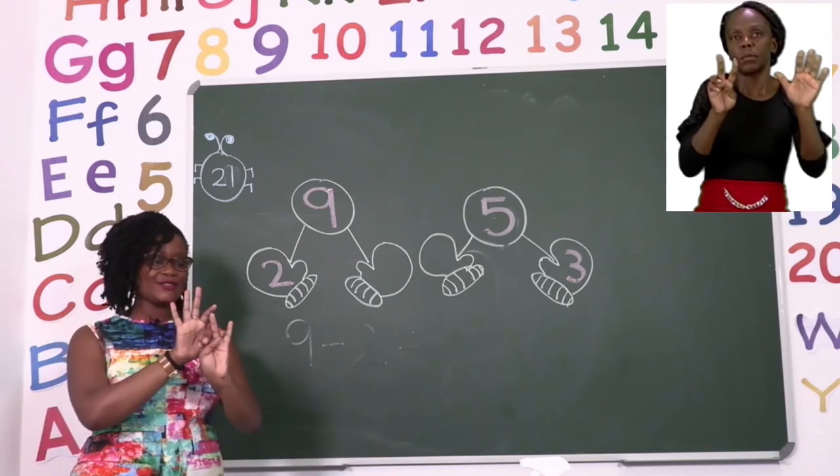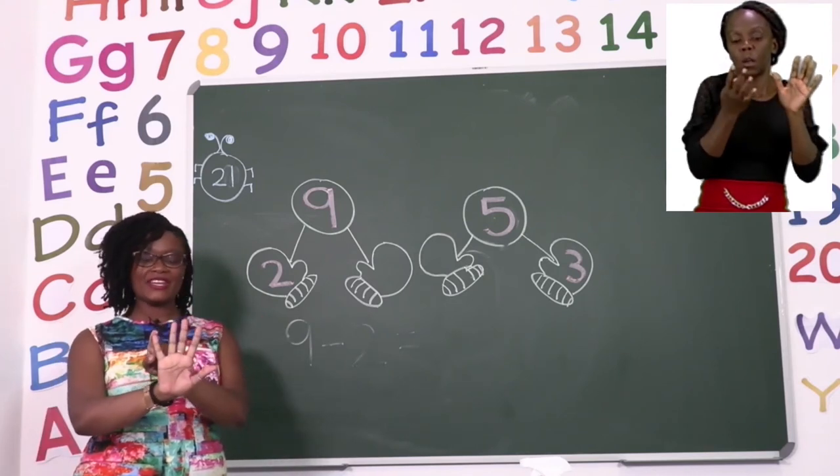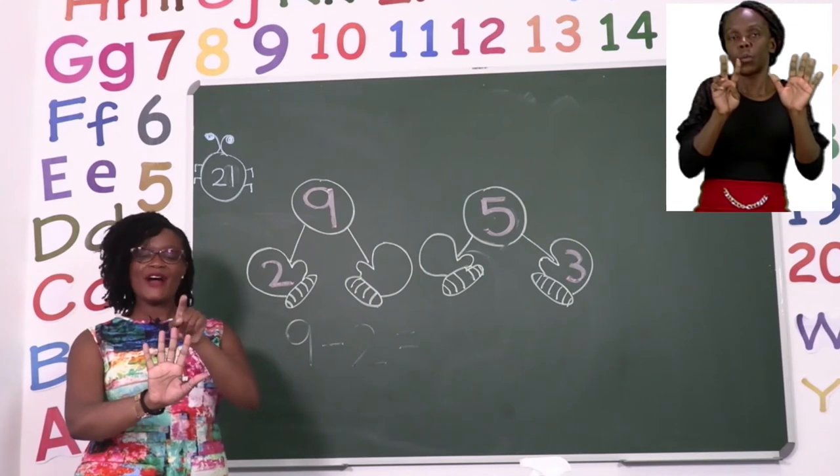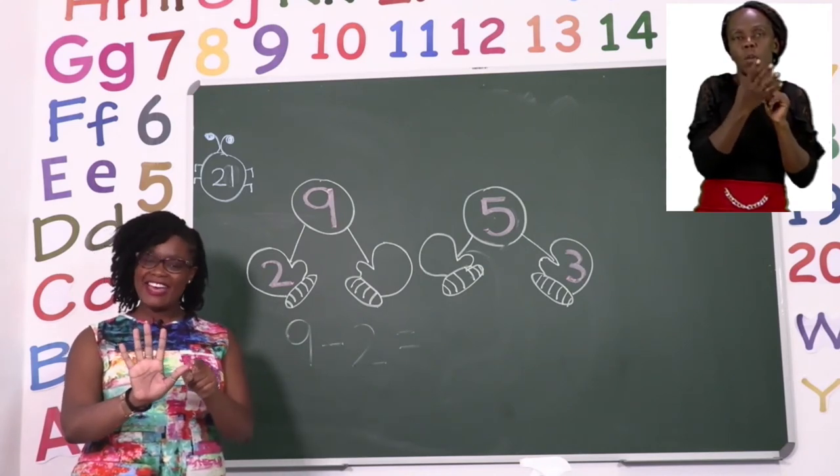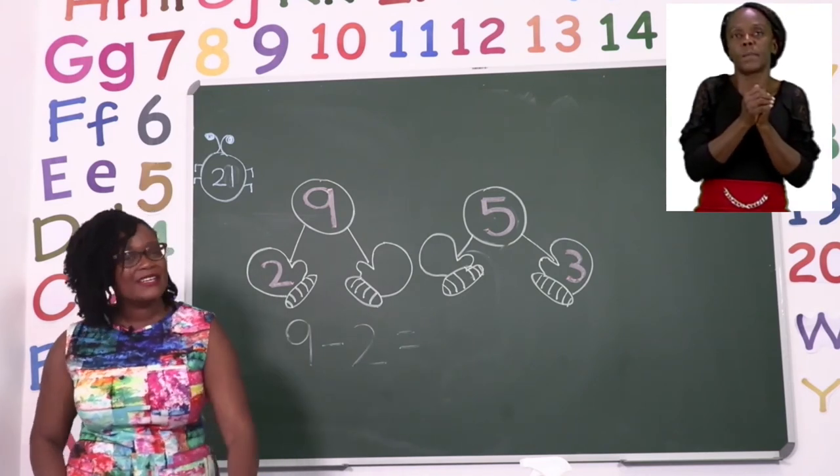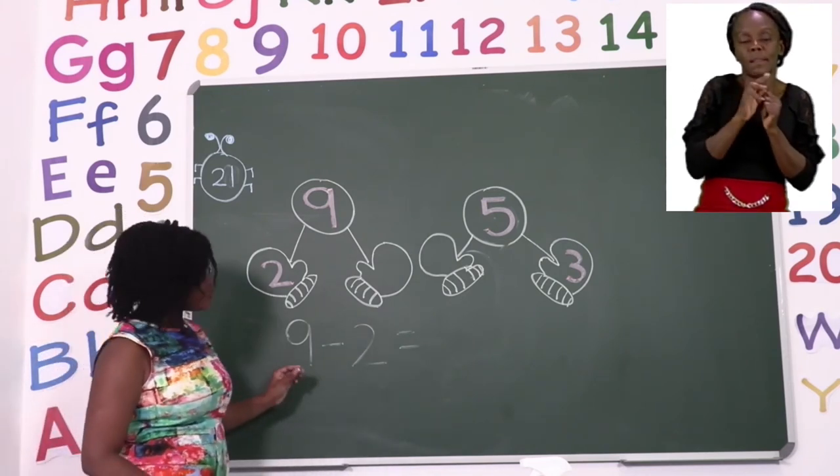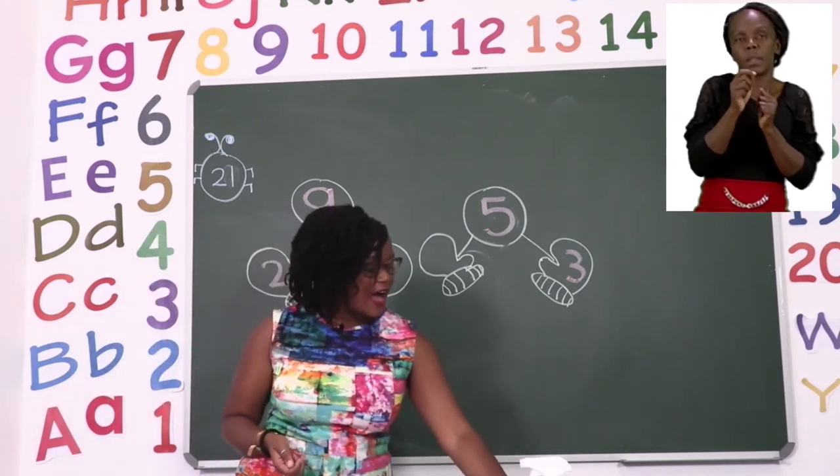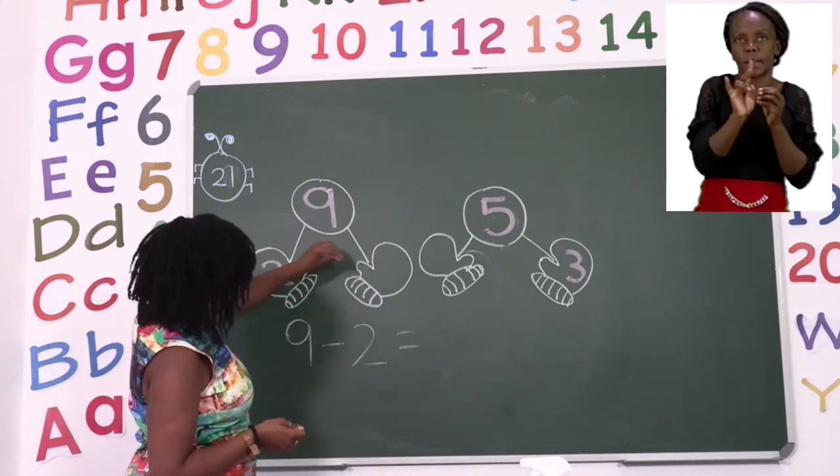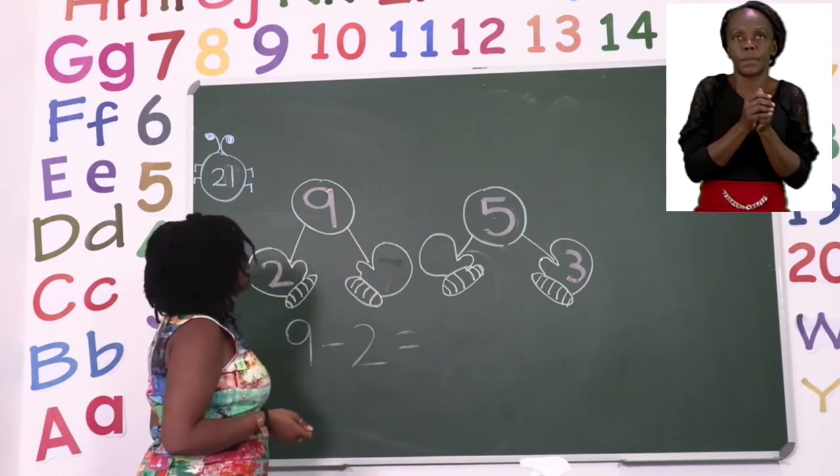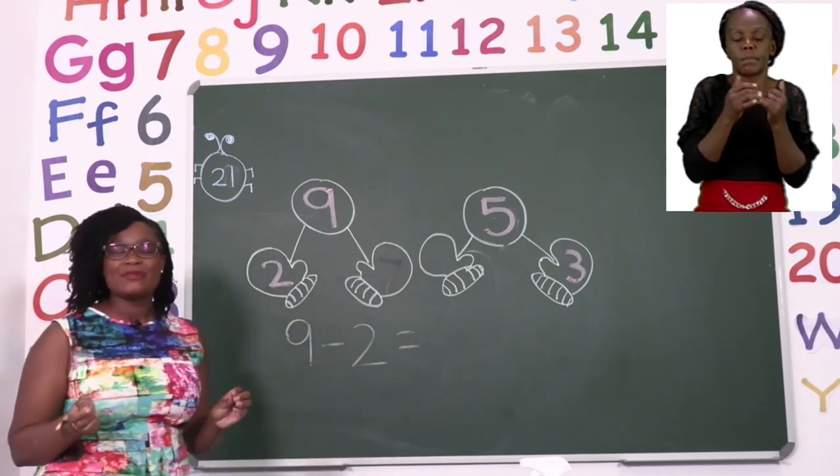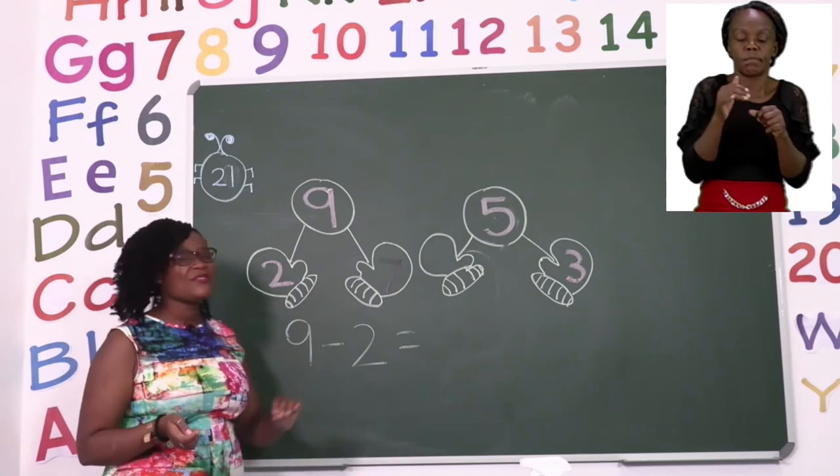Now let's count how many we have left. One, two, three, four, five, six, seven. So our answer becomes seven. So we are going to write our seven. Now we have a complete pair of mittens.